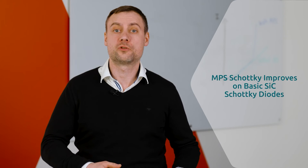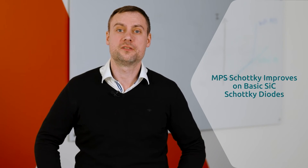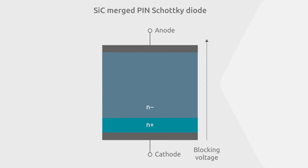The MPS diode features P-doped areas, also called P-wells, that are implanted in the drift zone. This forms a P-ohmic contact with the metal at the Schottky anode and a PN junction with the lightly doped silicon carbide drift layer.